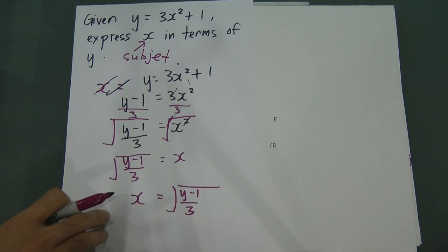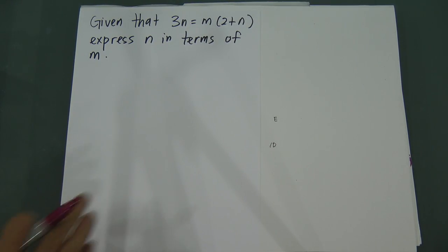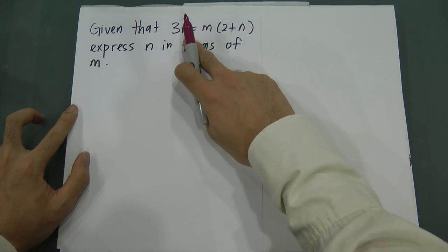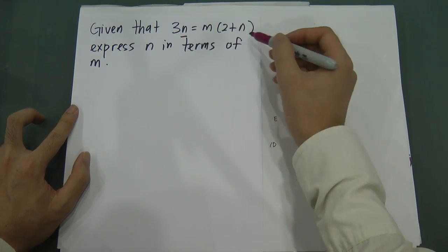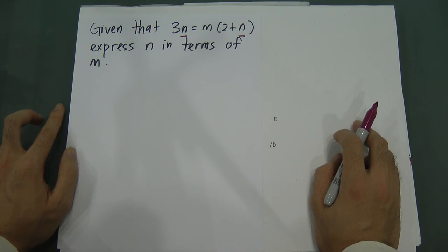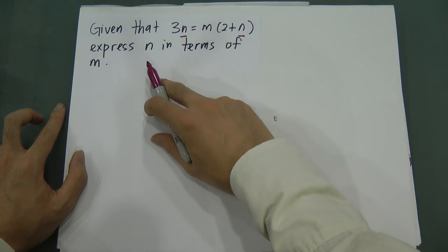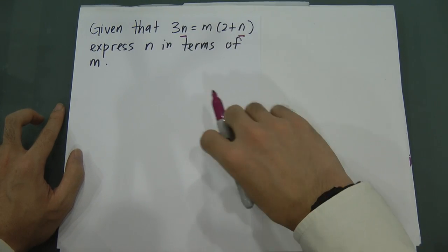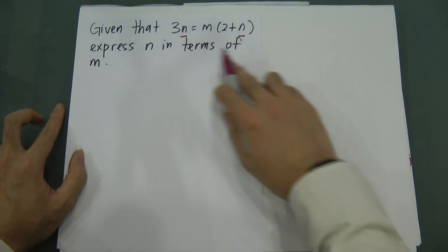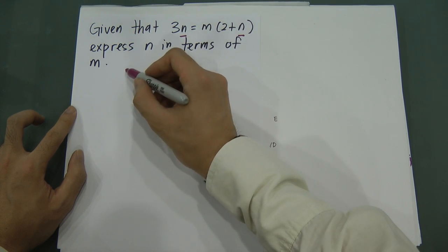Let's look at a second example. The question gives you: 3n equals m bracket (2 plus n), and you need to express n in terms of m. The big problem here is if you try to divide by 3, you cannot get the answer because there is an n on both sides. So your objective is to categorize all the n terms on one side, then factorize out the n.